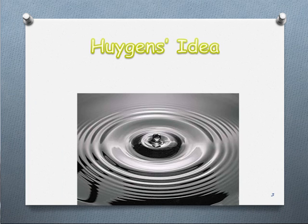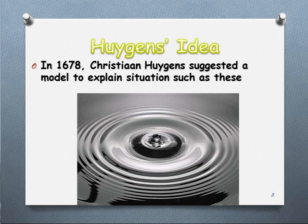A few hundred years ago, Huygens came up with this model to explain situations such as these. How do we actually predict where the next wavefront will be? In a basic situation where there's no interference or anything like that, it's pretty easy. But once we move into refraction, where there are changes of angles, it gets a little bit harder. Basically, what Huygens' Principle suggests is that we use geometry to predict the position of the next wavefront if we know the previous one. Every single point on a wavefront can be considered to be a source of a secondary wave.